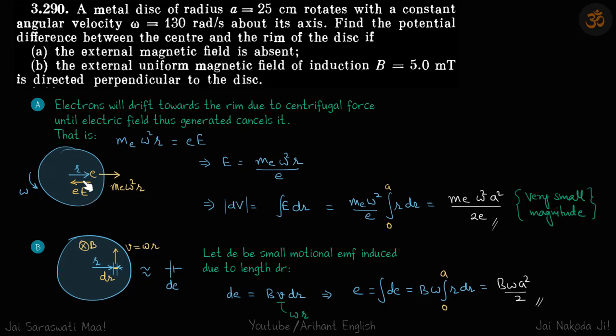So this E is at a distance r, it is not a constant. This gives E as a function of r. Now small potential difference dv across this small element dr will be E dot dr. And E and dr in the same direction, that will become E*dr. So we will put the value of E here and integrate r from 0 to a to get our answer.